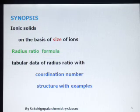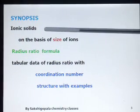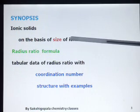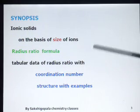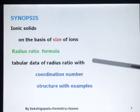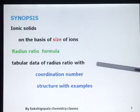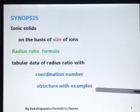Hello everybody, welcome to my channel Saksha Gopala Chemistry Classes. Dear students, we will see today's class about radius ratio in ionic solids. Our synopsis is: first we will see about ionic solids on the basis of the size of the ions, then we are going to see the radius ratio formula, and finally we will compare with a tabular data presentation depicting the radius ratio and variation with the coordination number along with structures and examples.